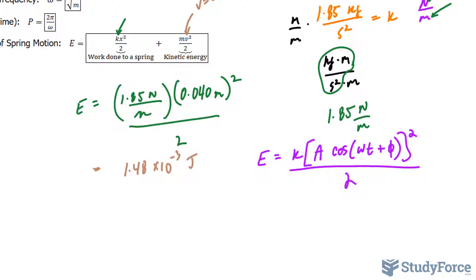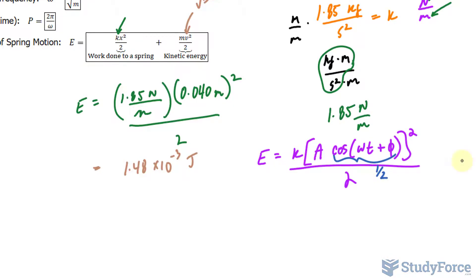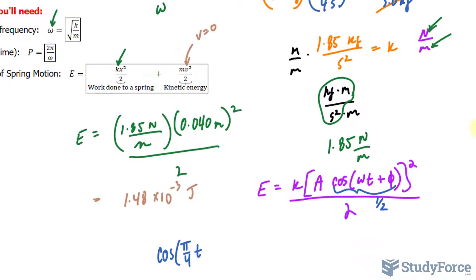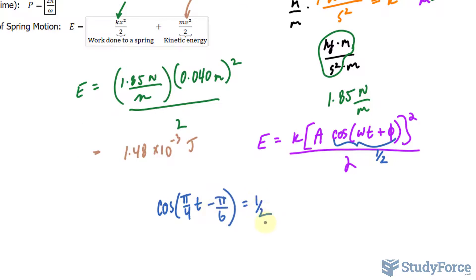So in order for us to get half the energy, we must get half the amplitude, and that happens when this part is equal to half. I have cosine, and at this point I can go ahead and replace what is actually omega and phi. That part should equal to half of what it is so that when you multiply it to the amplitude, you get half the displacement.